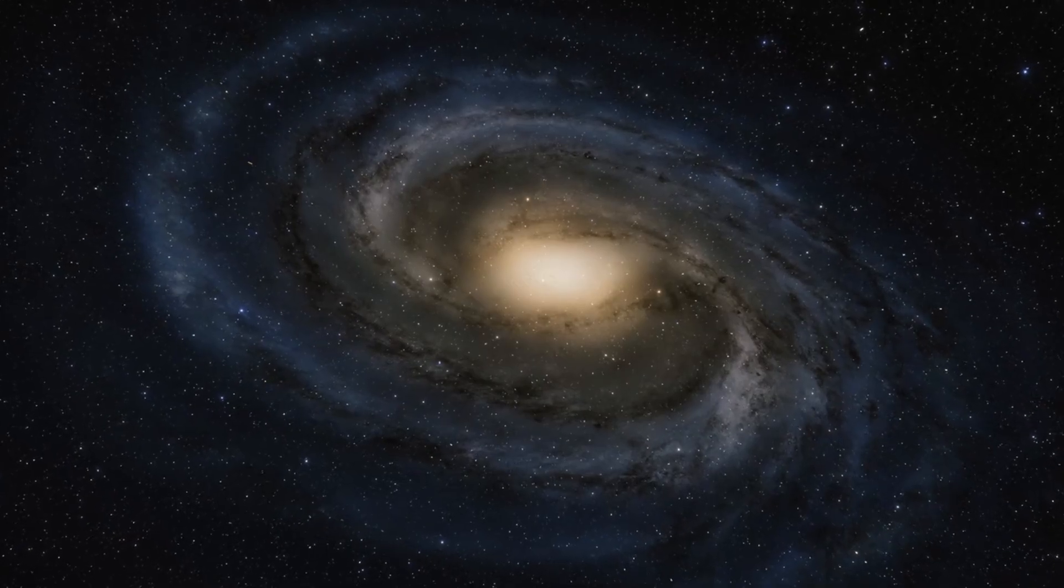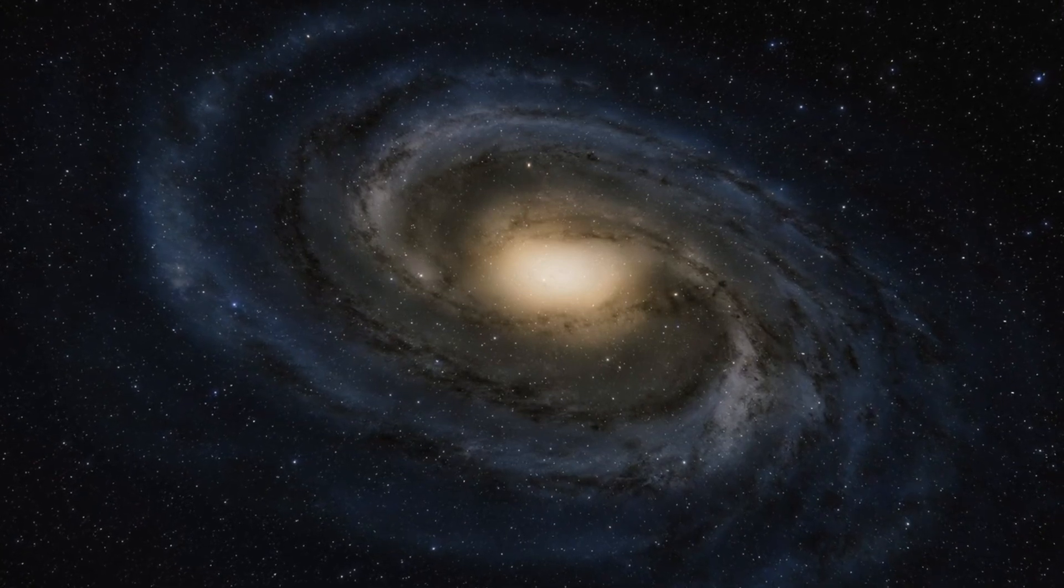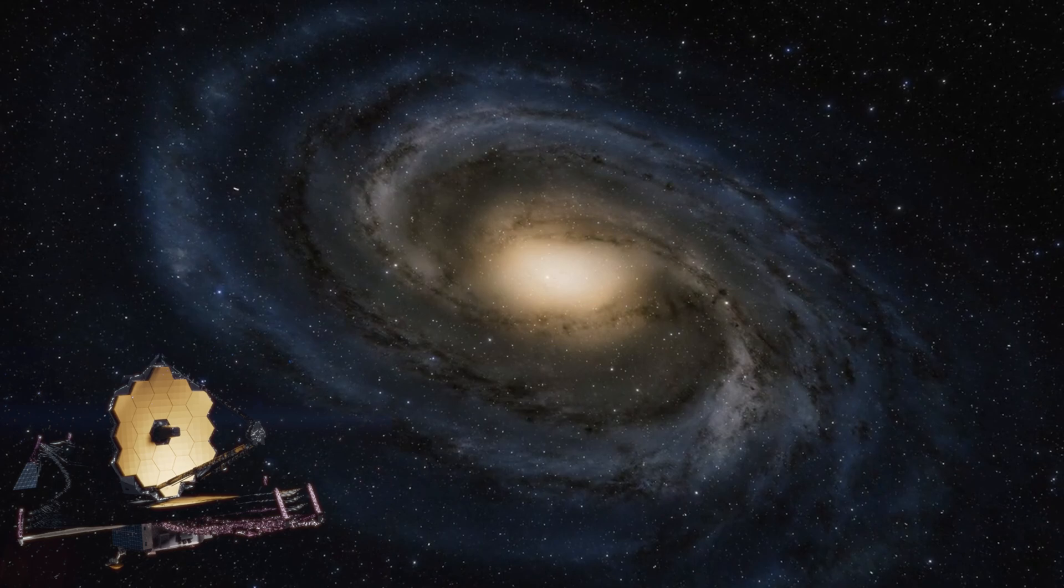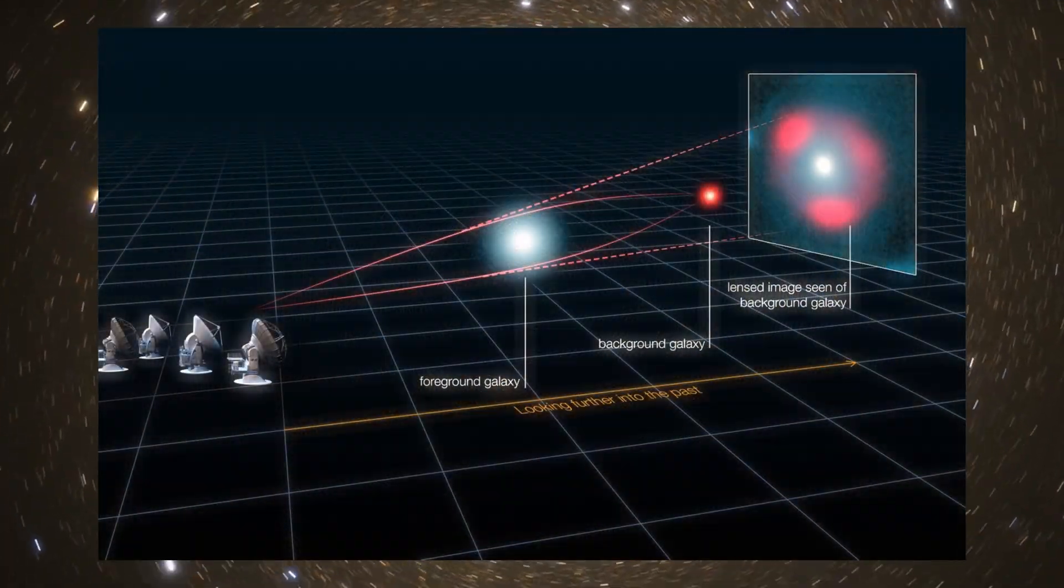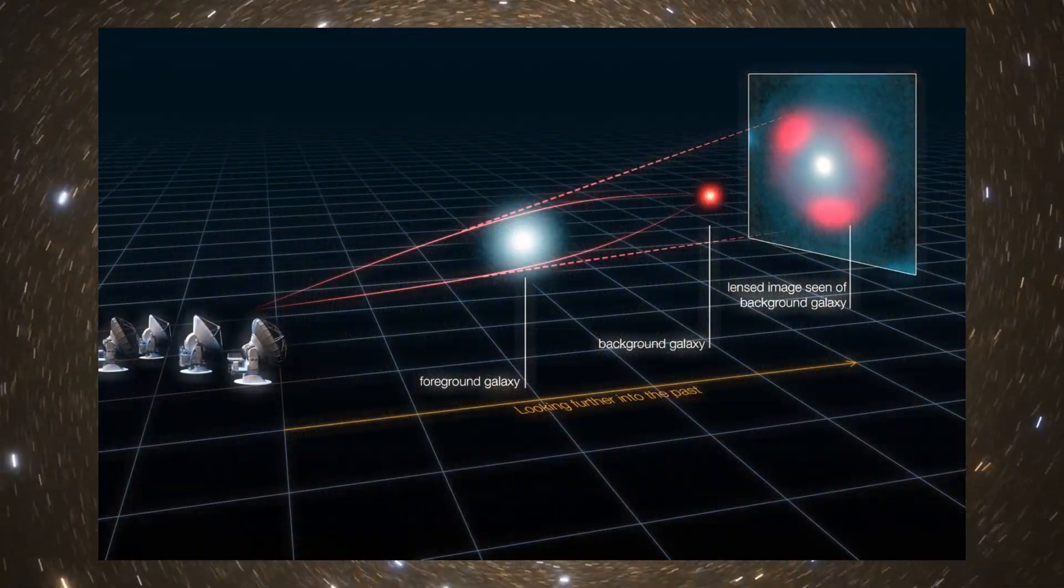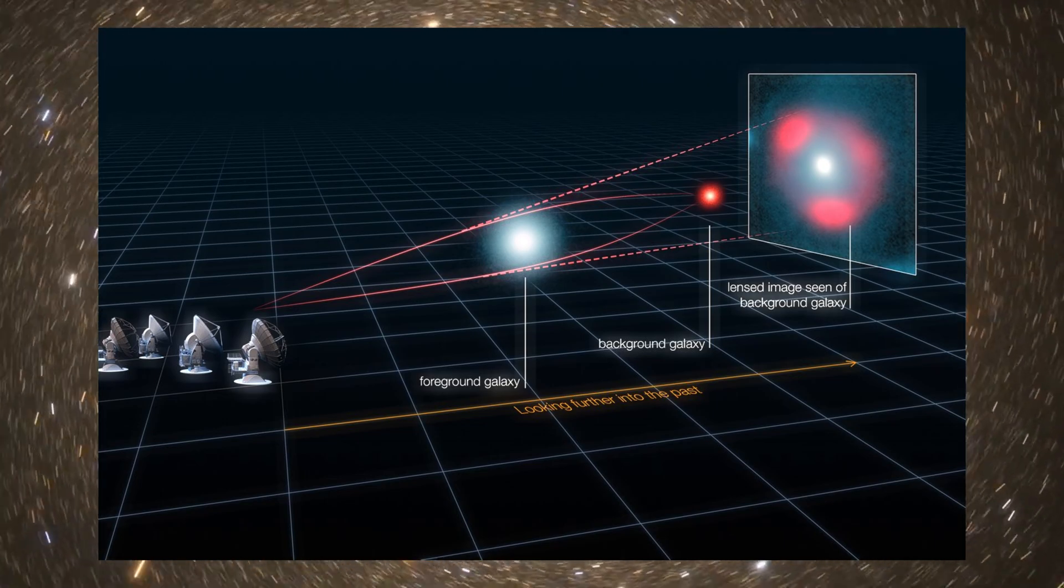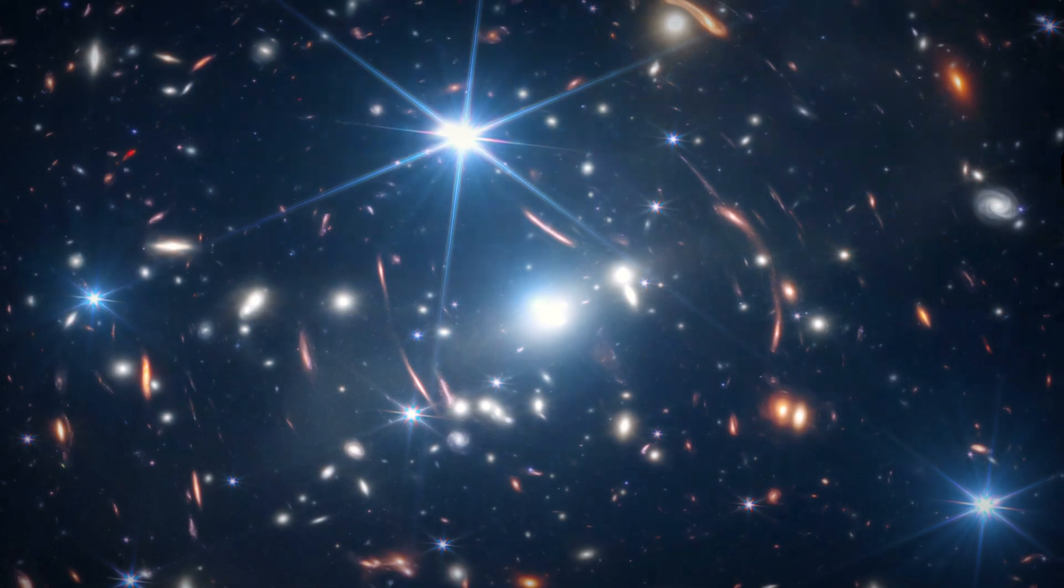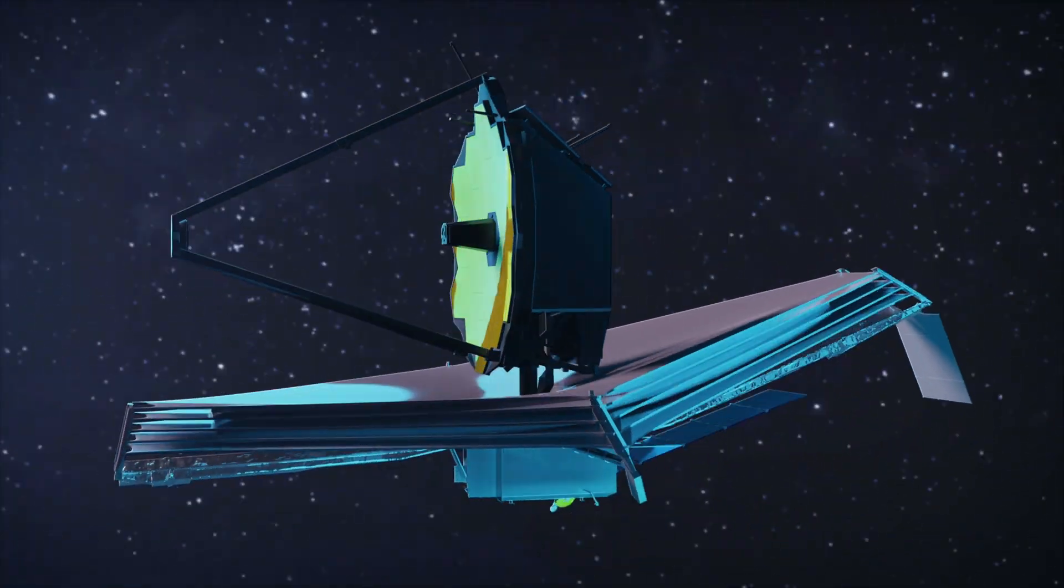The Firefly Sparkle galaxy is a very distant and faint galaxy that was detected by James Webb using a technique called gravitational lensing, which is a phenomenon where the gravity of a massive object such as a cluster of galaxies bends the light of a background object such as a galaxy and magnifies it. This allows Webb to observe galaxies that would otherwise be too dim to see.